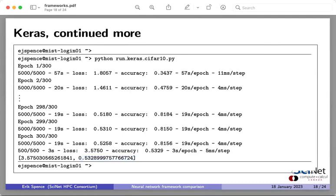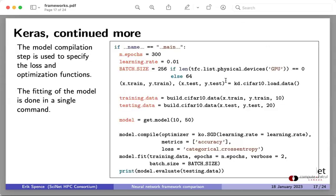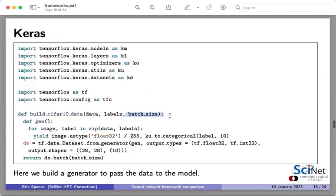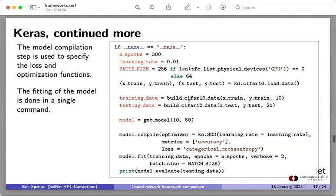There was a question about how training and testing are split. In Keras the load_data function returns two tuples, each containing the input data and targets for both training and testing — it comes pre-separated. Same as with PyTorch, where the train flag controls which split you get. So it automatically downloads the two blocks of data pre-separated and ready to go.